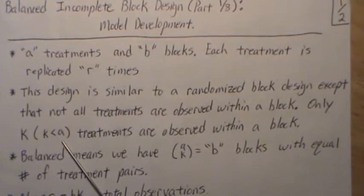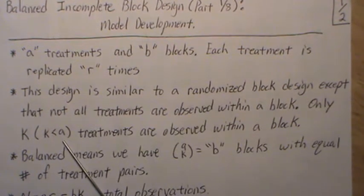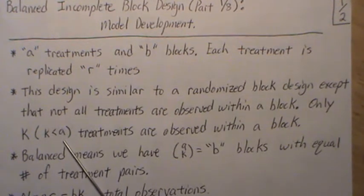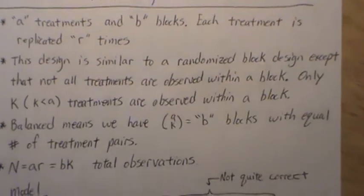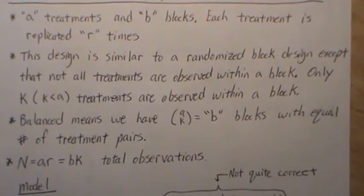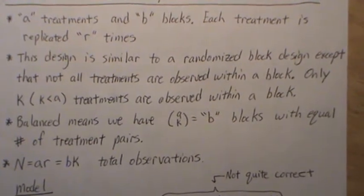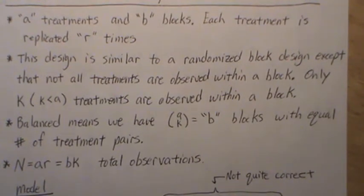In a randomized or completely randomized block design, all A treatments are within one block, but here there's only K. The word balanced means we have as many blocks with equal number of treatment pairs.